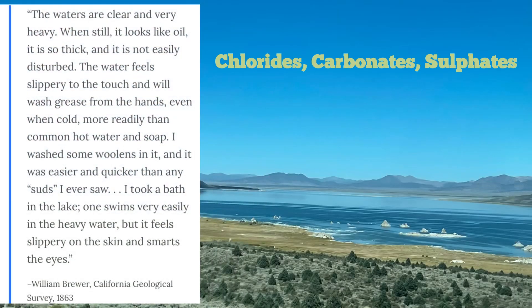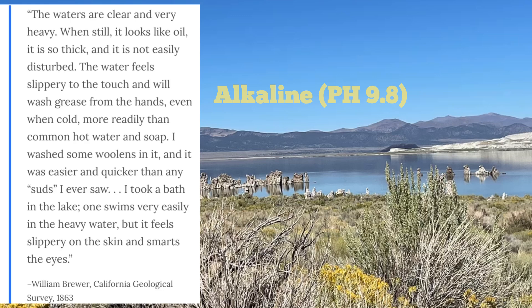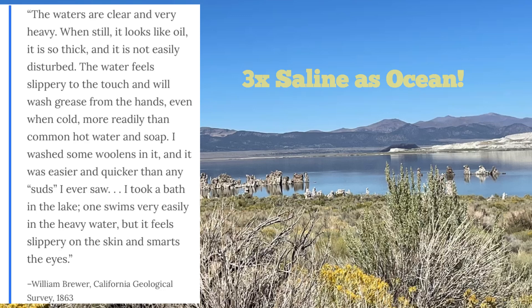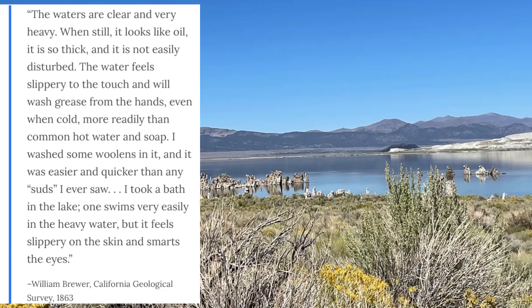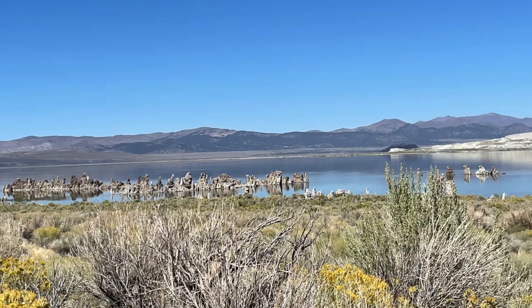Mono Lake contains chlorides, carbonates, and sulfates. It's an alkaline lake with a pH of 9.8 and is almost three times as salty as the Pacific Ocean. So why is it so salty and heavy with dissolved solids? Mainly because it is a closed lake. With the only natural way for water to leave the lake being evaporation, up to four vertical feet of water can evaporate during the course of a year, meaning without the inflow of freshwater streams, there would be no lake. So while it is naturally saline, it becomes even more concentrated in salts and other minerals when it is artificially reduced.